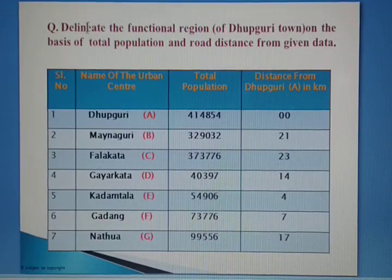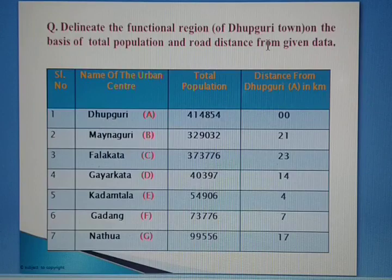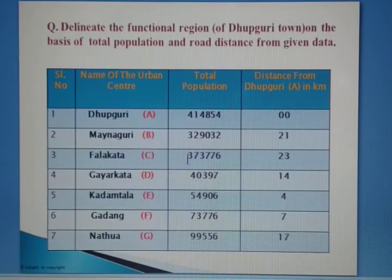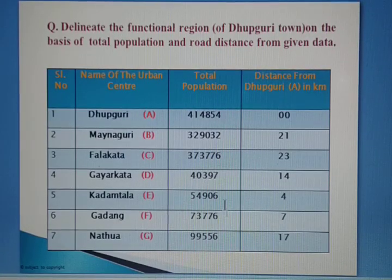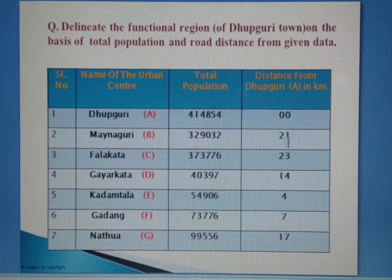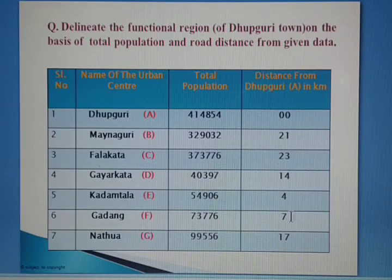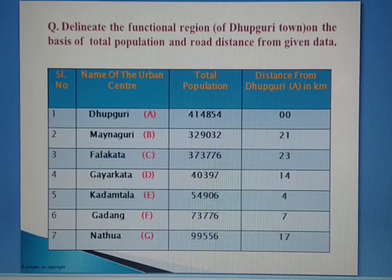The question asks: delineate the functional region of Dhubguri town on the basis of total population and road distance from the given data. The data table has columns for urban center, total population, and distance from town A. Dhubguri itself is at zero distance; Moinaguri is 21 km away, Falagata is 23 km, and others are at 4, 7, and 17 km respectively.